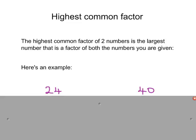In GCSE maths questions you quite often get asked to find the highest common factor of two numbers. That is the biggest number that's a factor of both the numbers you're given. Here's an example with 24 and 40.